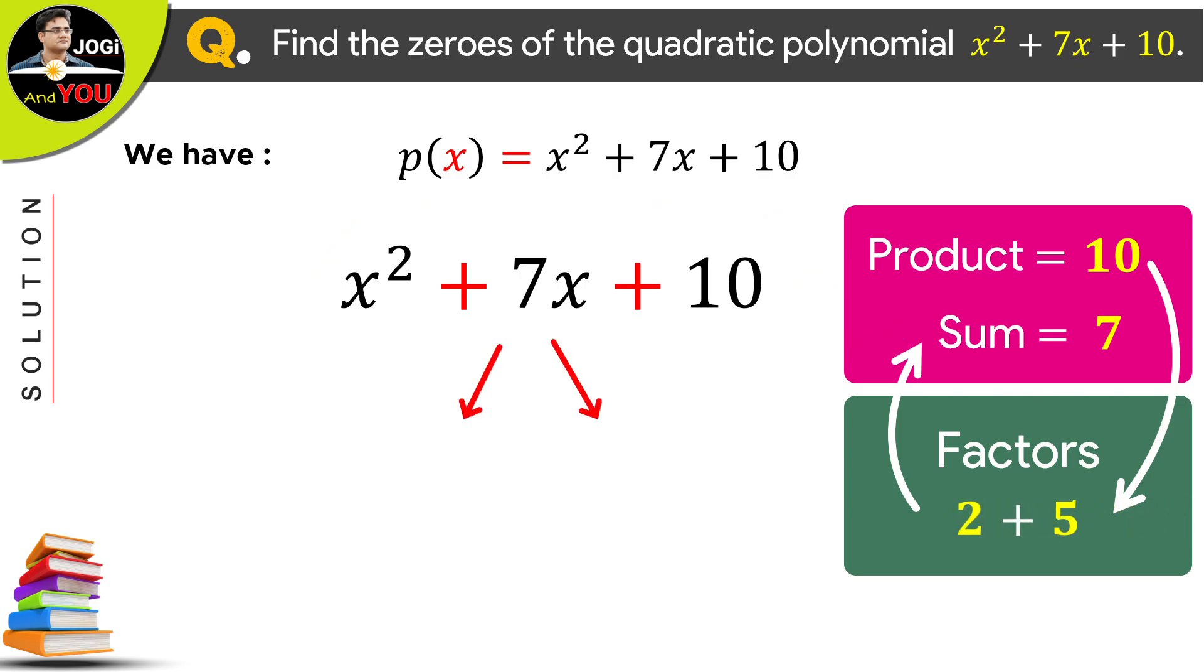Well then, split this 7. So, it is 2 plus 5. And if we split 7x, we get 2x plus 5x. So, do as I said and put these things somewhere else.